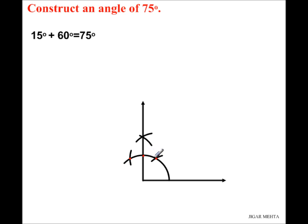Now between 60 and 90 degrees, this part is actually 30 degrees. So if I bisect this angle, this part, then what I get is 15 degrees. So this part will give me 15 degrees, and 60 plus 15 will give me 75 degrees.